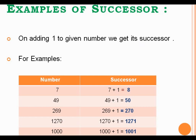So, for finding out the successor of a given number, you have to just add 1 to the given number and you will get the successor of that particular number. For example, 7 — we want to find out the successor of number 7, so we just add 1 to 7 and we get 8. So, 8 will be the successor of number 7.